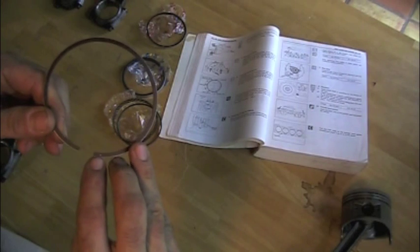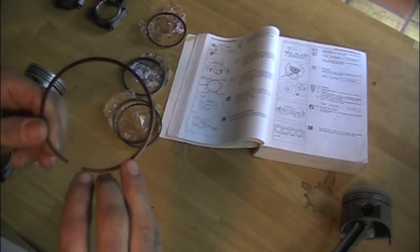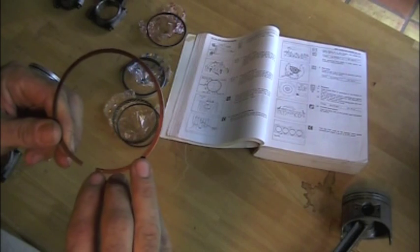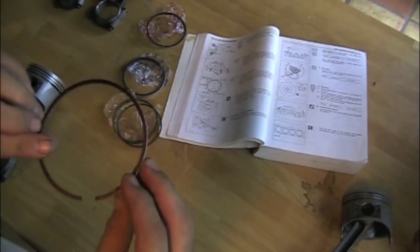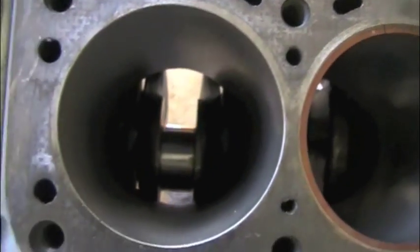Sometimes you'll see a mark on these. This one looks like it says an N on it. This is the number one compression ring - it's stamped with an N and that'll go up.